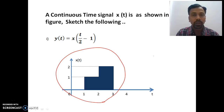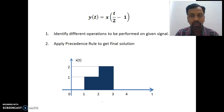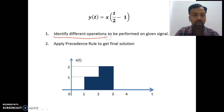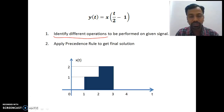y(t) is equal to x(t/2 - 1). Now, whenever I have more than one operation on a signal, I need to identify how many operations there are and what different operations need to be performed on the input signal so as to generate the required output.